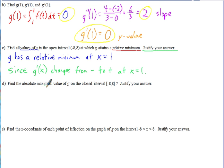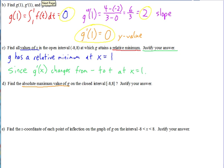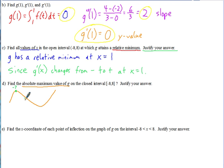For part d, find the absolute maximum value of g on the closed interval from −8 to 8. For an absolute maximum we use the first derivative test and compare candidates. From our analysis g is increasing, decreasing, then increasing. The absolute maximum could occur at the relative max at x = −7, or at the right endpoint x = 8. We compare g(−7) with g(8) to see which y-value is larger.